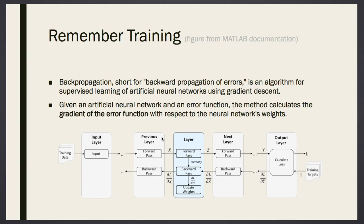At the heart of the training of neural networks, we had something called backpropagation — short for backward propagation of errors. What we backpropagated was the error, the loss. Since we used an algorithm called gradient descent, we were backpropagating the gradient of the error — how much the error changed affects how we updated the weights during training.